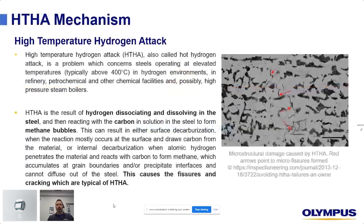HTHA mechanism. First of all, it's really a buzzword these days, but just to be sure everybody is on the same page — HTHA, high-temperature hydrogen attack, also called hot hydrogen attack, is a problem which concerns steels operating at elevated temperatures, typically above 400°C, in hydrogen environments such as refinery, petrochemical, other chemical facilities, and also possibly high-pressure steam boilers.